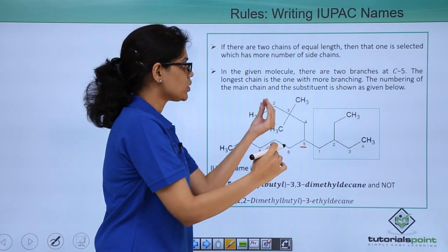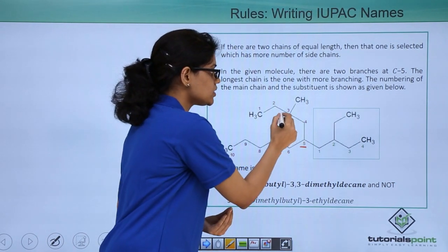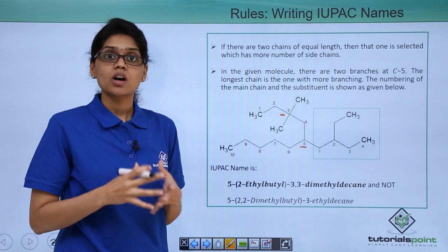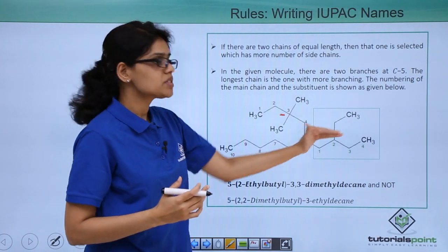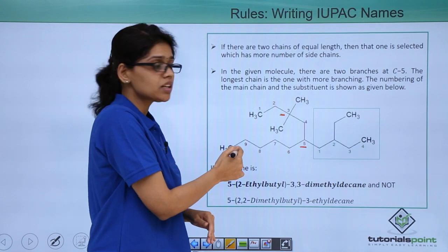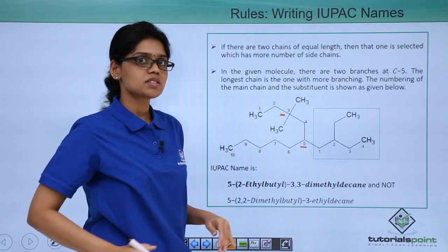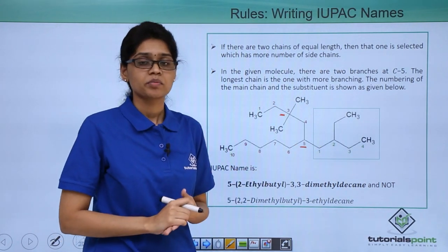If you number from this side also 1, 2, 3, 4, 5. You are branching at 3rd and 5th position. So now there is a confusion as to which chain should I take? Should I consider this particular chain as parent chain? Or should I consider this particular chain as parent chain and this as the substituent?